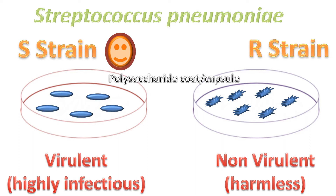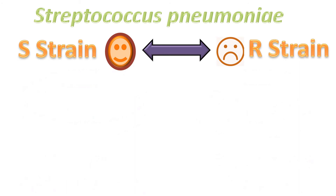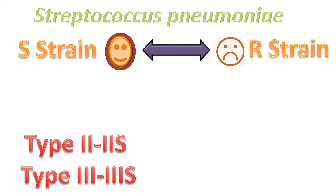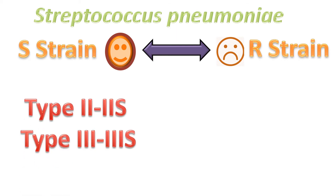The R strain is genetically identical to the S strain except that it carries a mutation that prevents it from making the polysaccharide coat. Occasionally, S type cells can mutate into R type cells and vice versa. Griffith worked with 2S and 3S strains, which have type 2 and type 3 coats respectively.